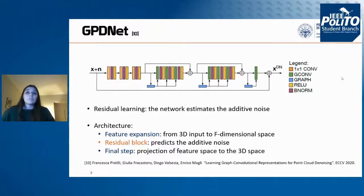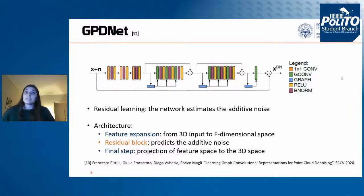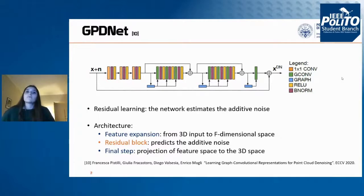The architecture is divided into three main steps. First, the three-dimensional noisy input is projected to a lower-dimensional space where the graph convolution can be computed. After that, a cascade of two residual blocks is inserted, and in each residual block a better estimation of the additive noise is provided. Each residual block is constituted by three graph convolutional layers, and at the beginning of each block the graph is computed, leading to a dynamic graph construction. Finally, the estimated additive noise is projected back to the three-dimensional space through a graph convolutional layer.